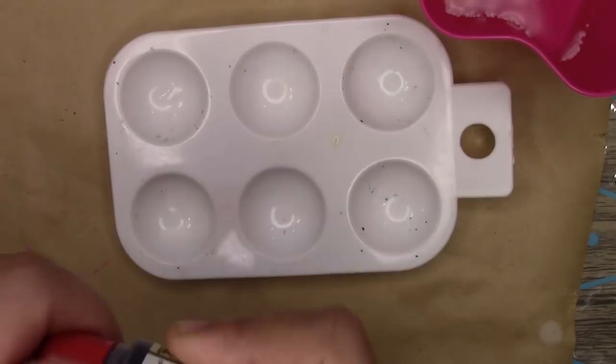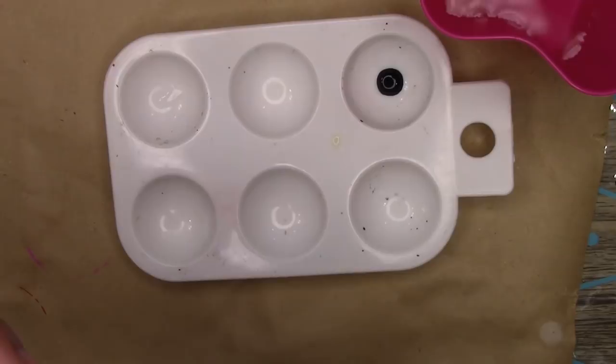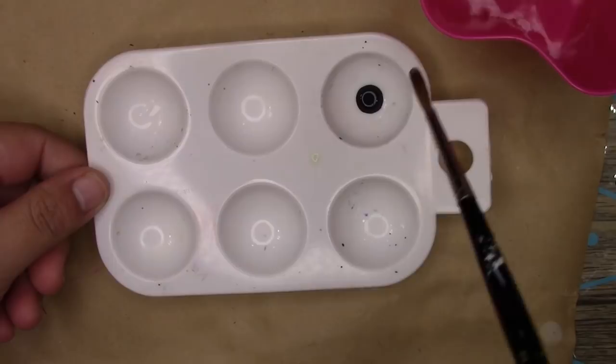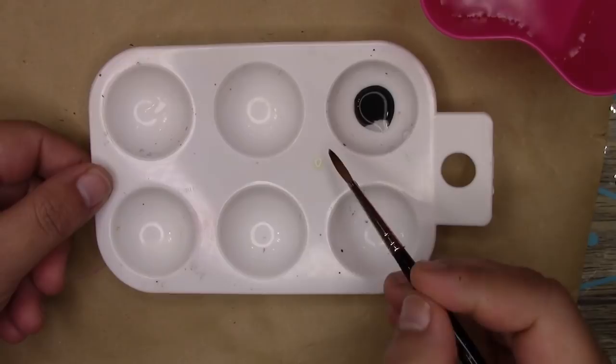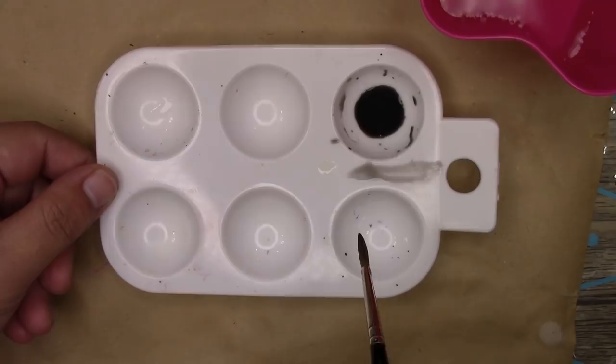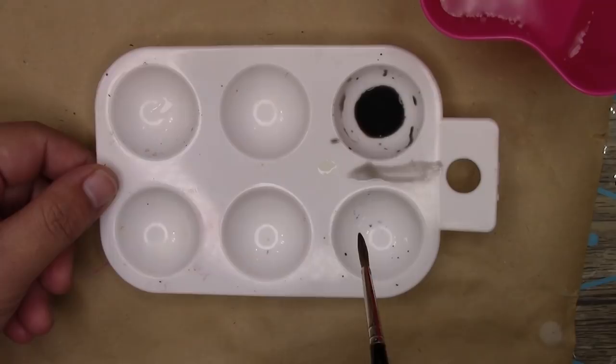The shade will then settle into the crevices of the model but won't heavily cling to those raised areas, and it won't obscure the color of the model. This shade is watered down about three or four parts of water to one part shade—it's easy to count it in drops. I'm also using a touch of dish soap on the end of my brush, just the barest hint of soap. When you spread it on your palette, this mix should appear as transparent grey.